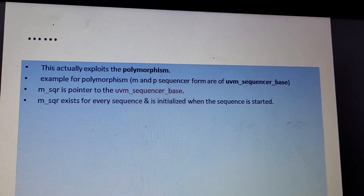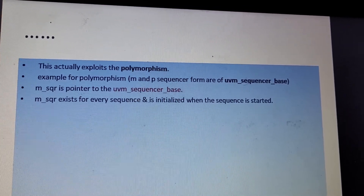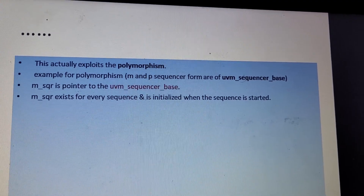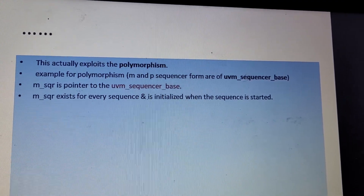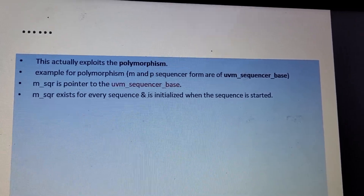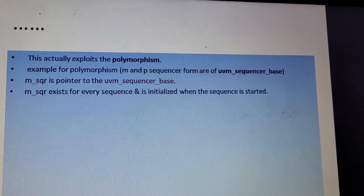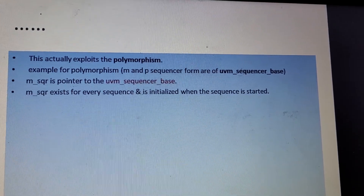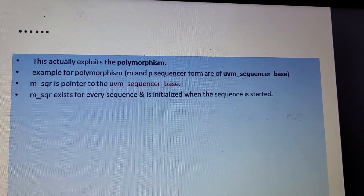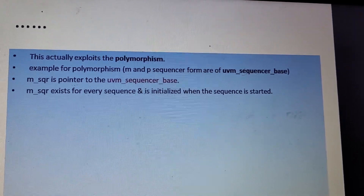Both sequencers actually exploit polymorphism — they are trying to exploit polymorphism, where polymorphism means an object behaves in different forms. m_sequencer is a pointer to the uvm_sequencer_base, and m_sequencer exists for every sequence and is initiated when the sequence is started.